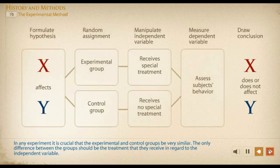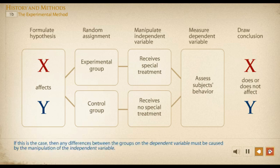In any experiment, it's crucial that the experimental and control groups be very similar. The only difference between the groups should be the treatment that they receive in regard to the independent variable. If this is the case, then any differences between the groups on the dependent variable must be caused by the manipulation of the independent variable.